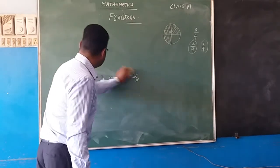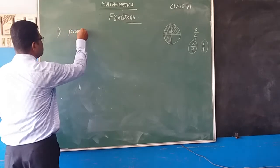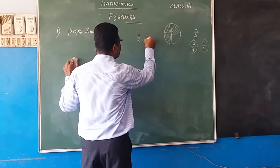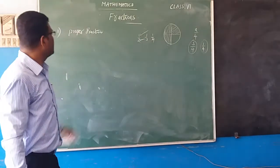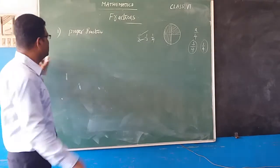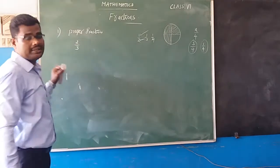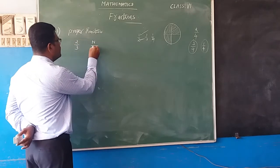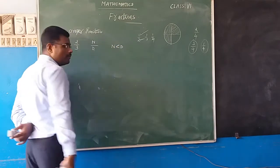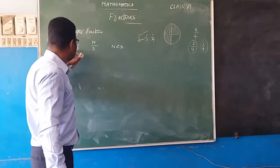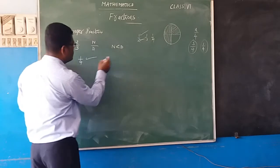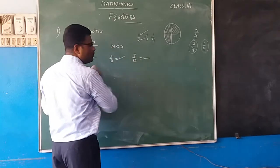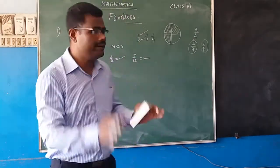Next, types of fractions. The first type is a proper fraction. A fraction is written in the form 1/2, 1/3, 1/4 — it consists of a numerator and a denominator. In a proper fraction, the numerator is always less than the denominator. For example, 2/3 — 2 is the numerator, 3 is the denominator. Fractions like 1/4 and 2/8 are proper fractions, but 7/4 is not, because the numerator is greater than the denominator.